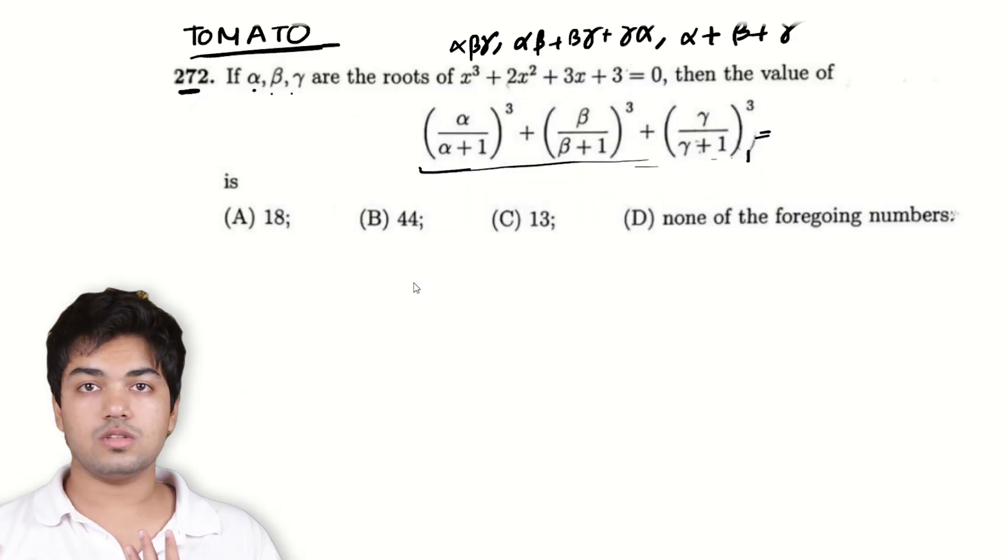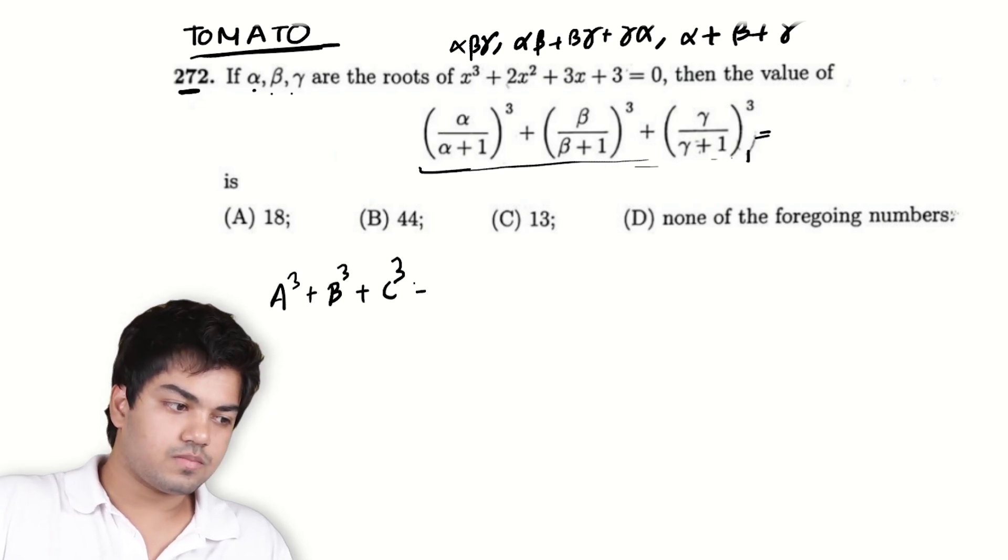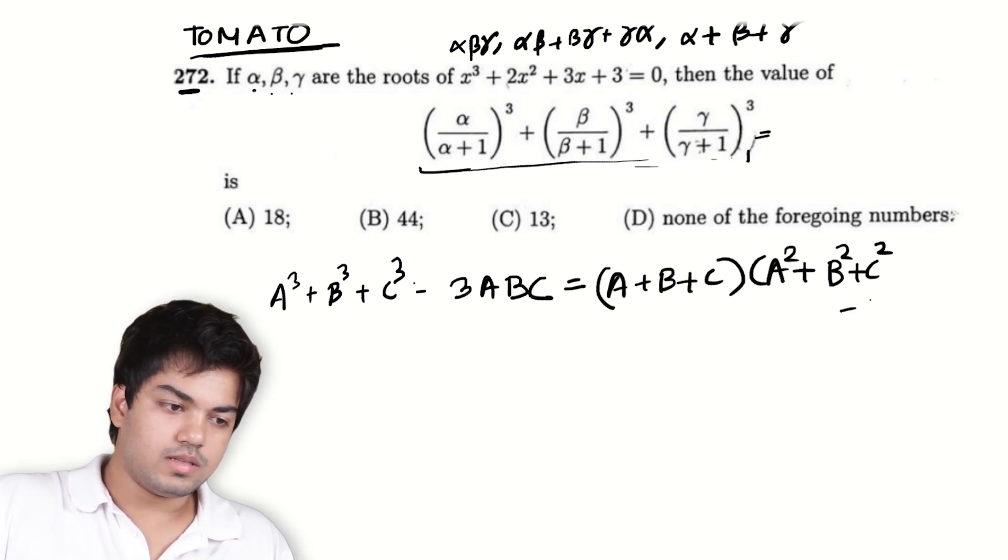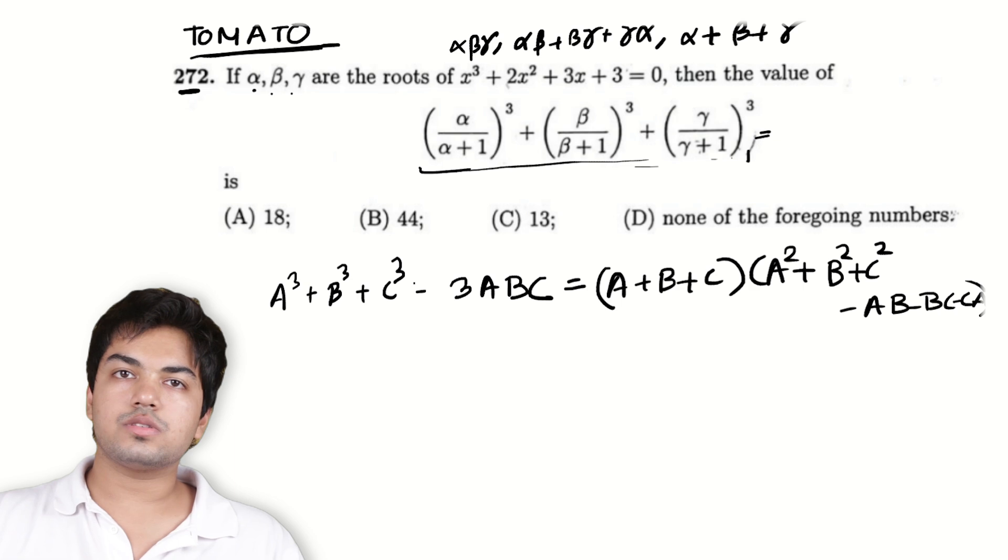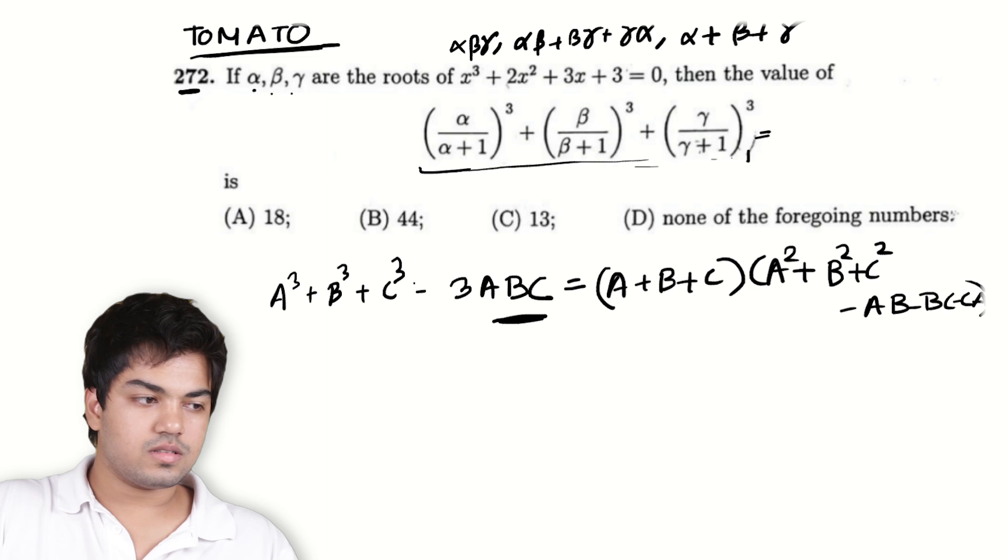First thing that I want to do whenever I see a sum of cubes is try to use the same formula which is a³ + b³ + c³ - 3abc is equal to (a + b + c) into (a² + b² + c² - ab - bc - ca). This is a famous formula that many students learn at a middle school level.